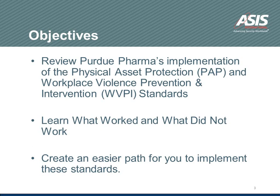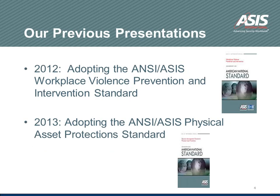We did the Workplace Violence Prevention Standard back in 2012, and then we did the PAP standard last year. We've also done presentations on those before, so some of the information, if you've attended our sessions before, will look familiar. However, today what we're going to do is take you through what we felt worked best for us as we took these processes through. We'll hopefully create an easier path for you should you decide to implement these standards as well. Our previous presentations in 2012 covered adopting the ANSI ASIS Workplace Violence Prevention and Intervention Standard, and in 2013, the Physical Asset Protection Standard.